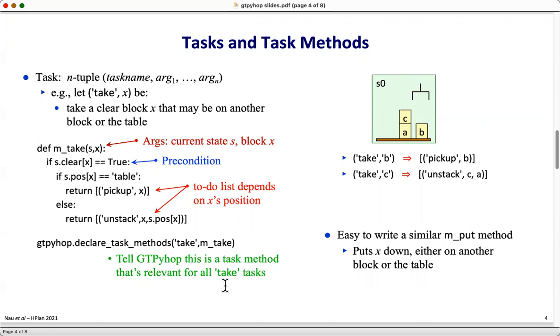As an example of applying this method, if we have the task take b and apply it in this state here, it returns the to-do list pickup of b. If we have take c, then since c is on top of a, it'll return an unstack to-do list instead. It's easy to write a similar input method for the task of putting x down either on another block or on the table.